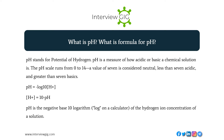What is pH and what is the formula for pH? pH stands for Potential of Hydrogen. pH is a measure of how acidic or basic a chemical solution is. The pH scale runs from 0 to 14: a value of 7 is considered neutral, less than 7 is acidic, and greater than 7 is basic. pH = −log₁₀[H⁺], and [H⁺] = 10^(−pH). pH is the negative base-10 logarithm of the hydrogen ion concentration of a solution.